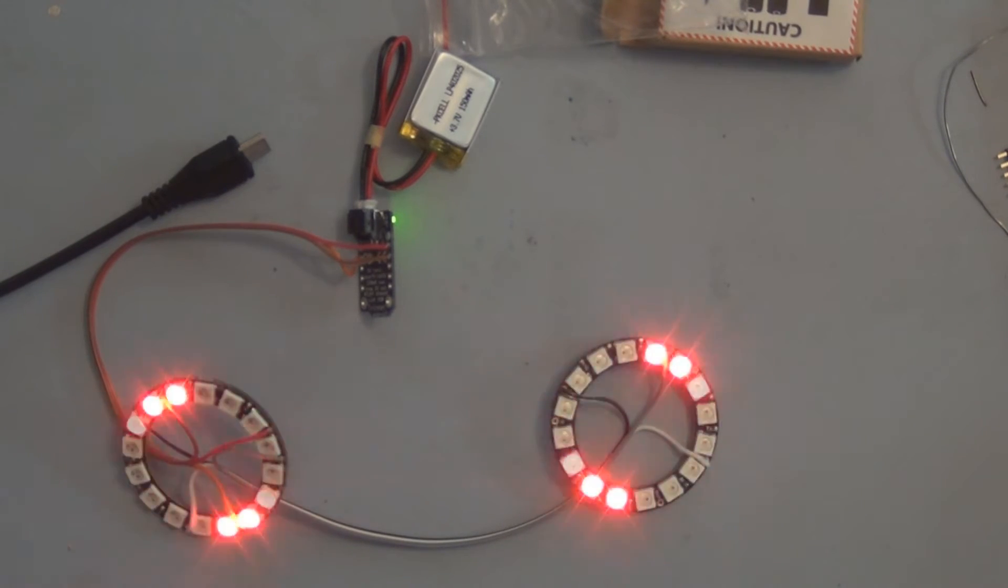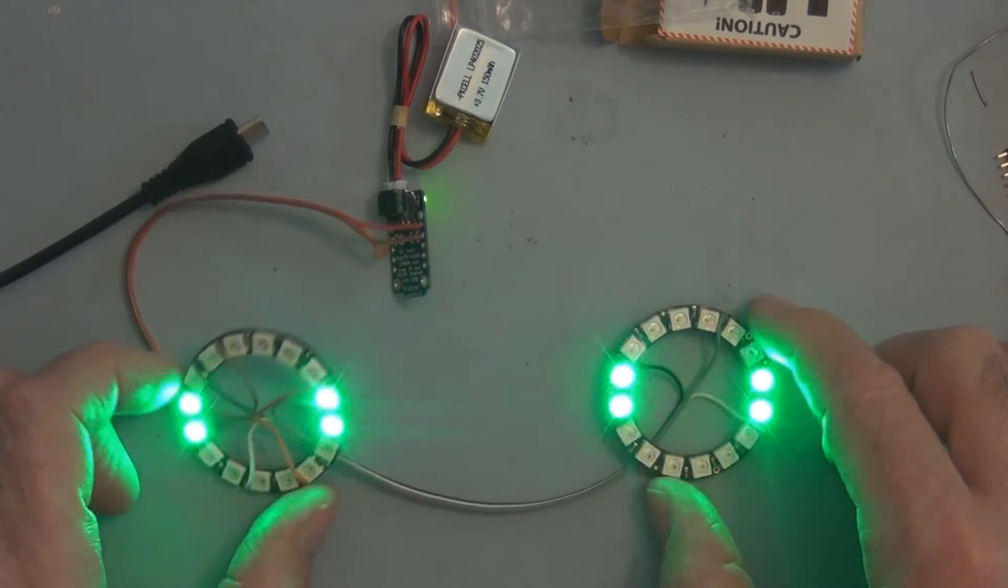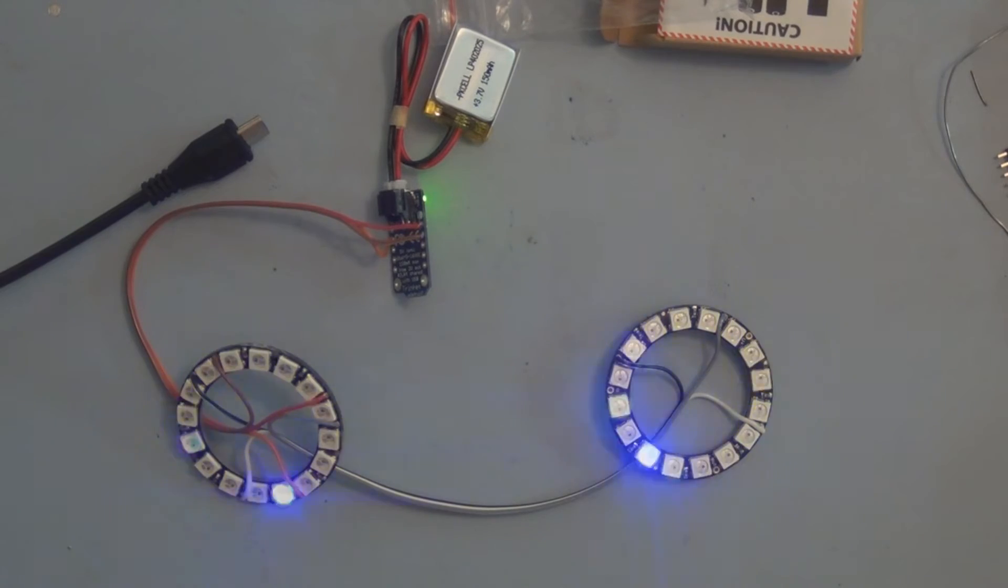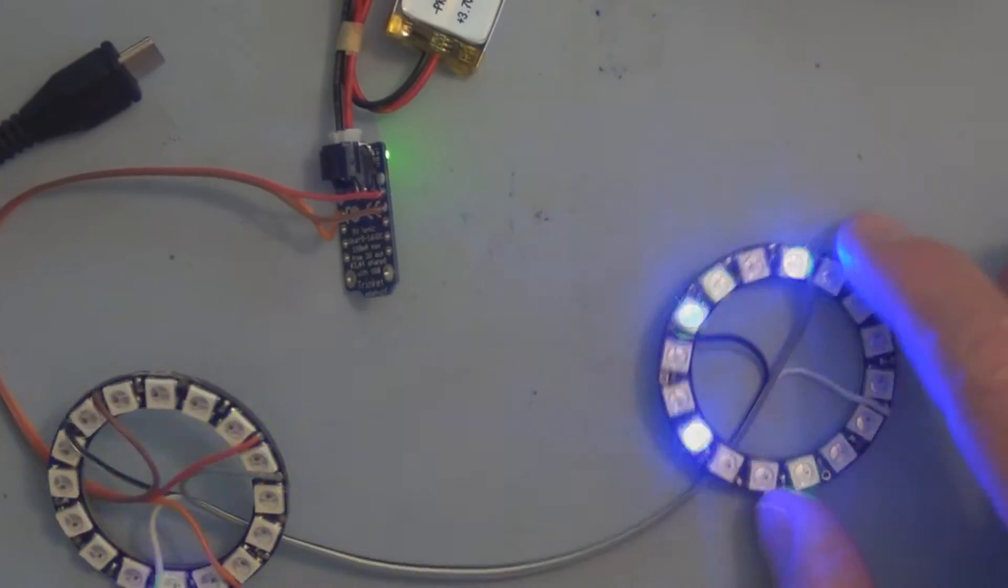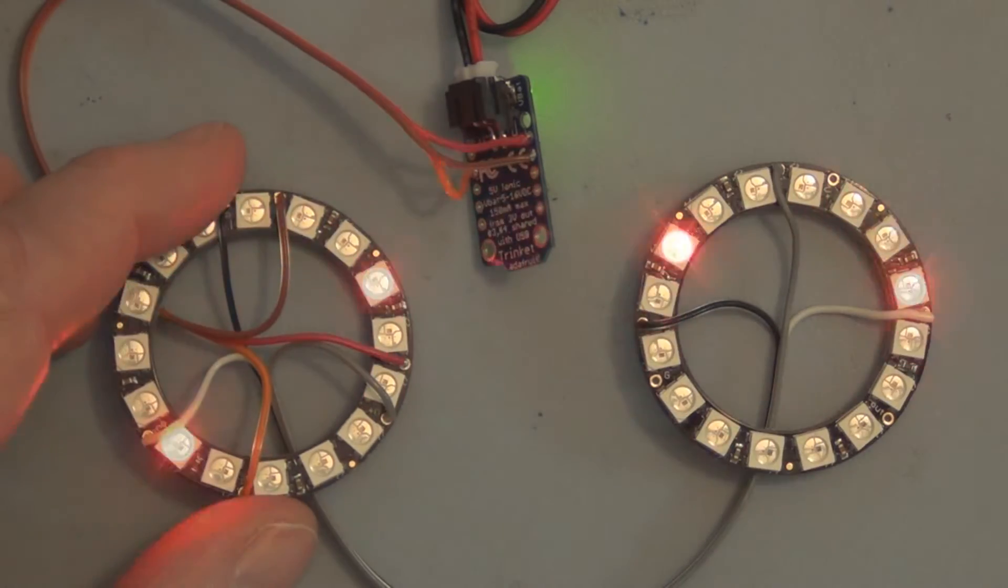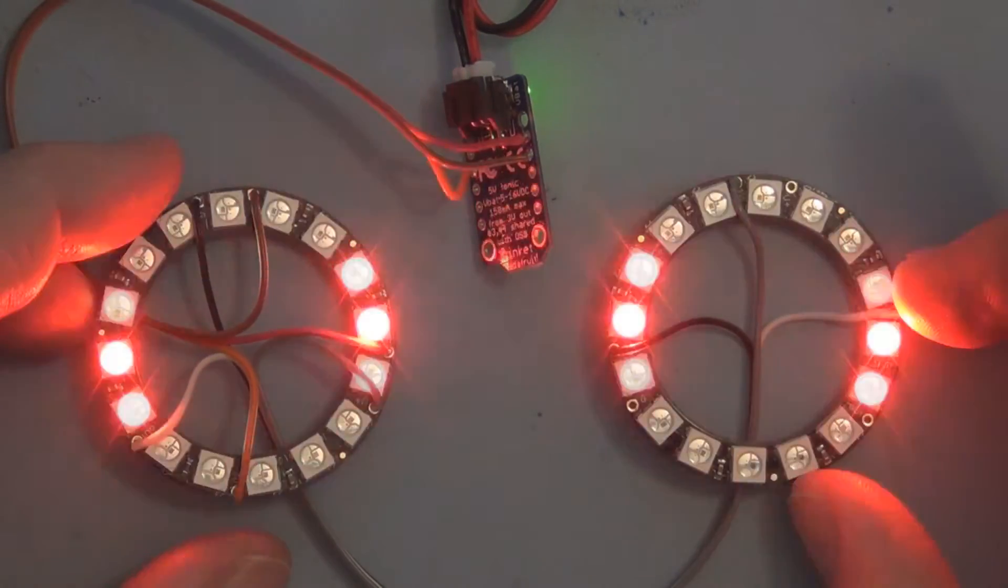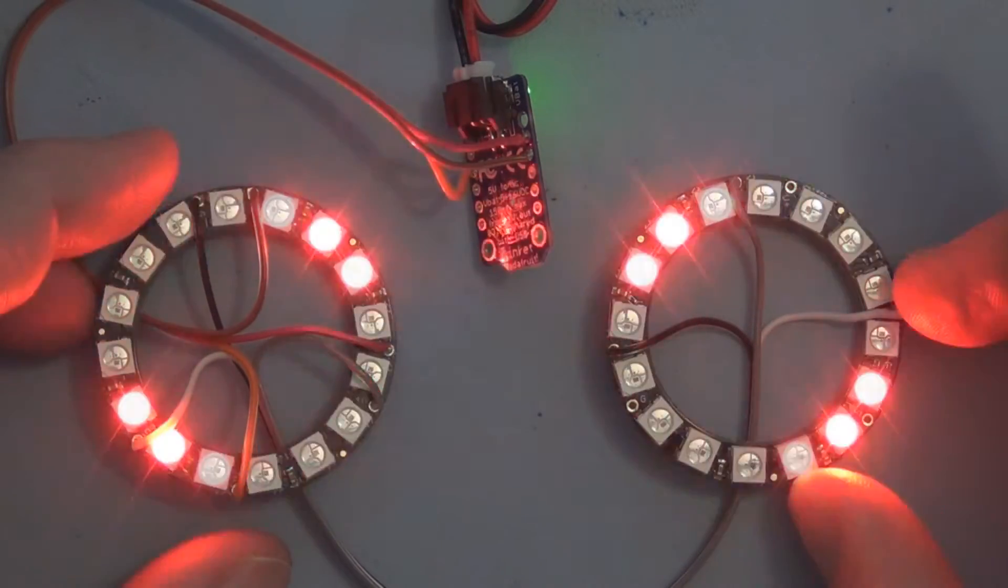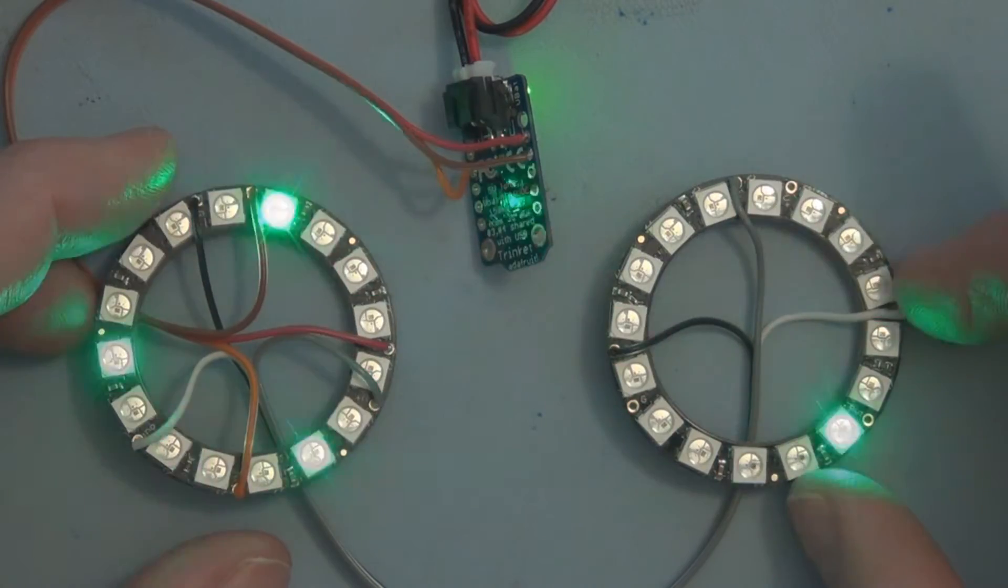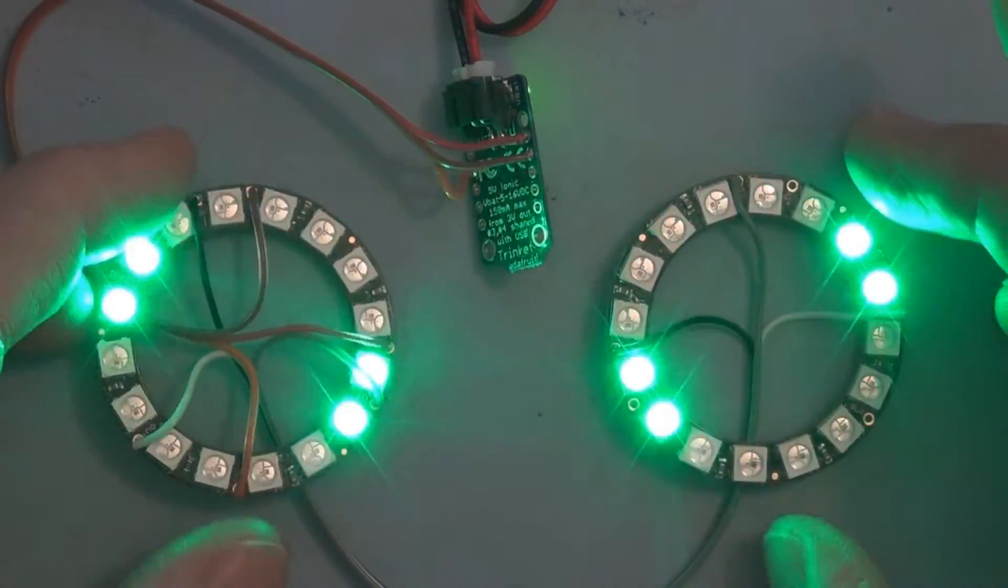Okay so it works but it gives you errors. AVR error. USB tiny underscore receive expected 4 got minus 5. I don't know, seems to be working. Just need to put these in the goggles now. I like that pattern. That one's just too random. That I like. That's random but it looks better with the green I think. That's definitely I think the best.